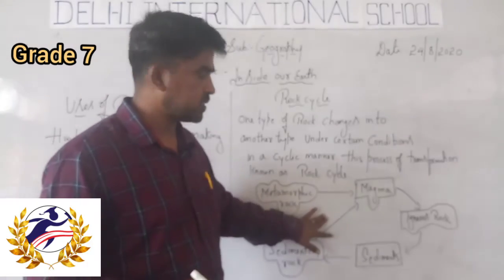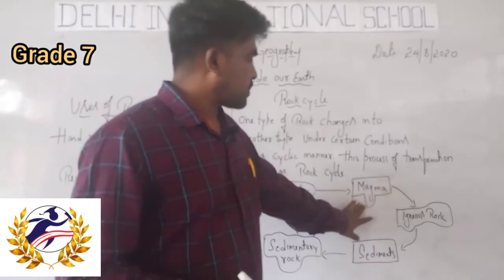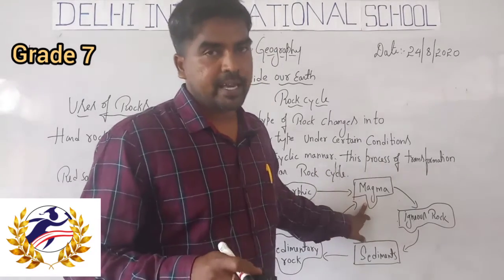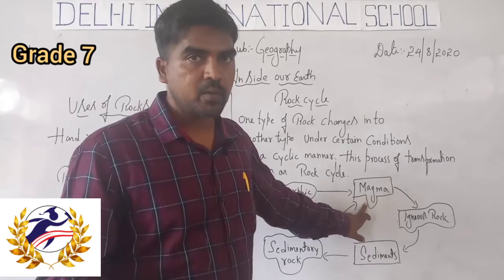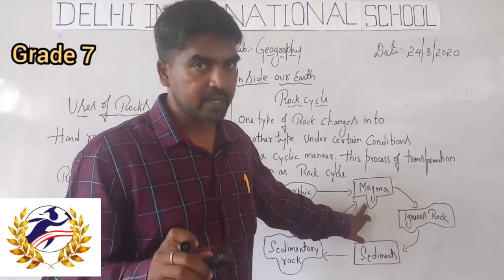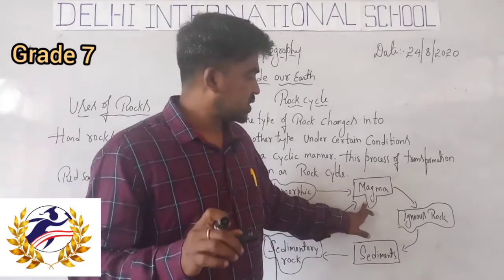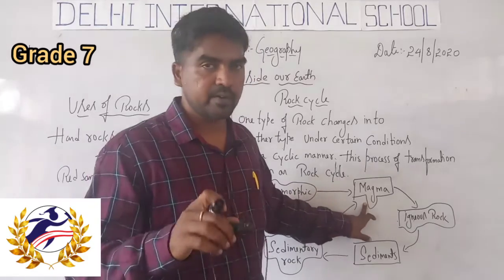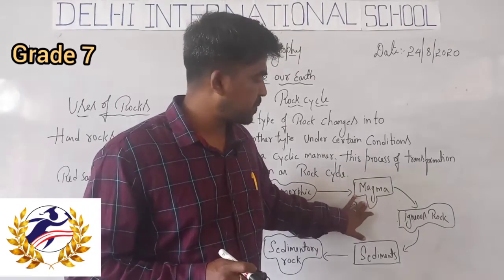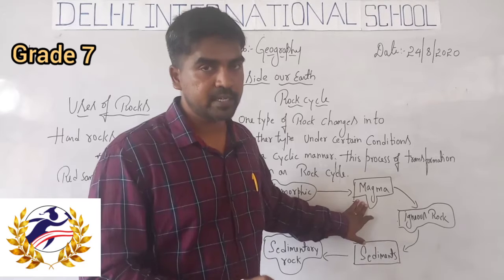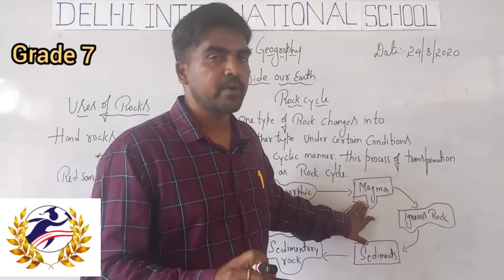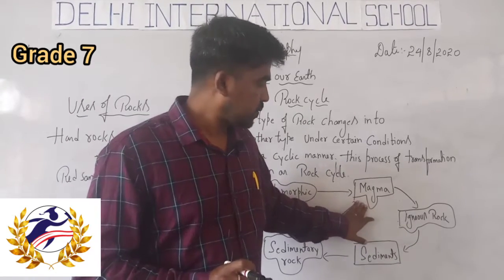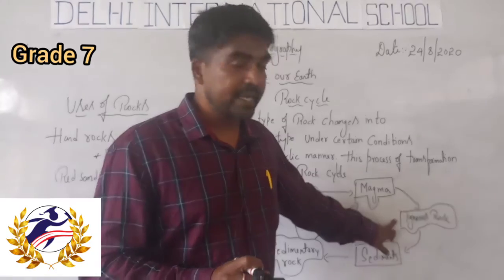Just observe this chart. Due to volcanic eruption, molten magma reaches the outer surface of the earth, and after cooling it turns into igneous rock — it becomes very hard. Sometimes the molten magma settles deep inside the earth without erupting, and it also becomes very hard there, forming igneous rock.